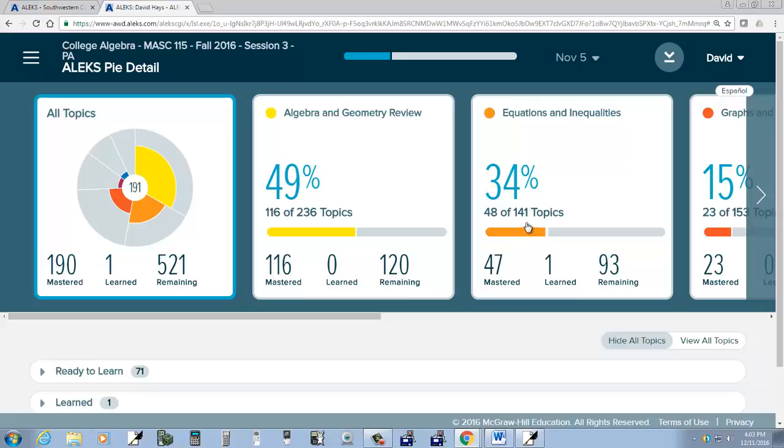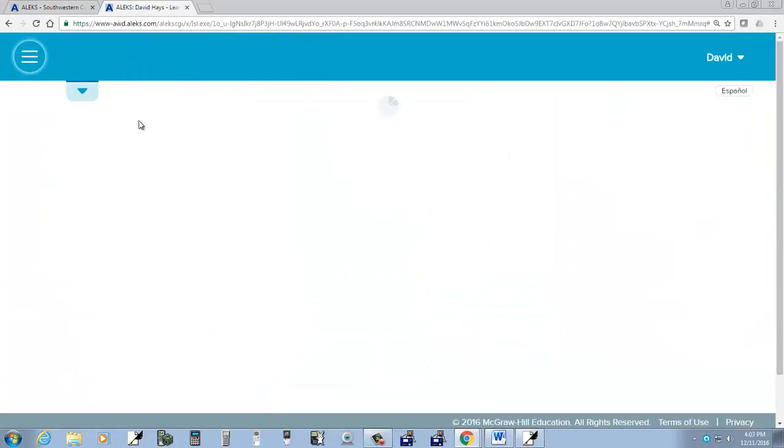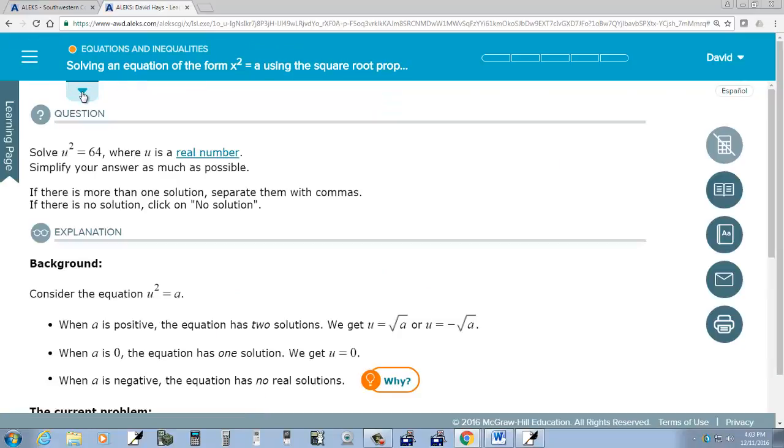This tells me that I've completed 48 of 141 topics, so 48 of 141. Okay, so let me go back to learn and just drop down here. Oh, it already comes up the one I want. Okay, nevermind.